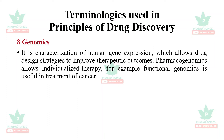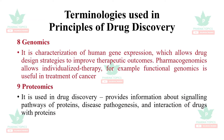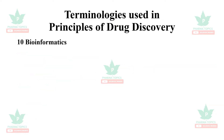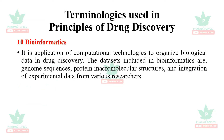Next is genomics. It is the characterization of human gene expression which allows drug design strategies to improve therapeutic outcomes. The branch pharmacogenomics allows individualized therapy. For example, functional genomics is useful in treatment of cancer. Proteomics is used in drug discovery — it provides information about signaling pathways of proteins, disease pathogenesis, and interaction of drugs with proteins.